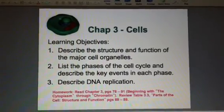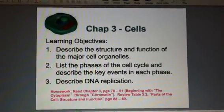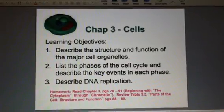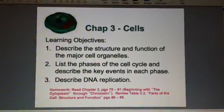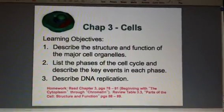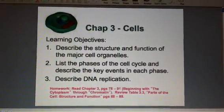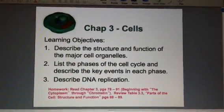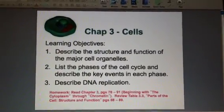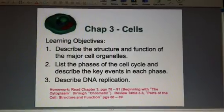We have three learning objectives with this chapter. Number 1, you're going to look at the different parts that are in the cells, which are called organelles, and you're going to learn what they do. Number 2, we're going to go over mitosis and the cell cycle and how cells grow and learn the different events that are happening in each of those phases. And number 3, we're going to look at DNA and how it replicates.